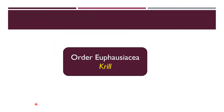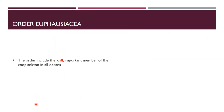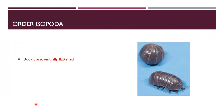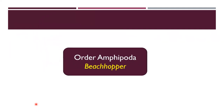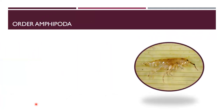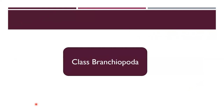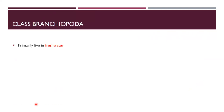Under order Euphausiacea, krill is an important member and krill serve as food for many other organisms. Order Isopoda includes pill bugs — ventrally flattened, aquatic and some terrestrial. Order Amphipoda includes beach hoppers — their body is laterally compressed. Some species are modified for burrowing, climbing, and jumping.